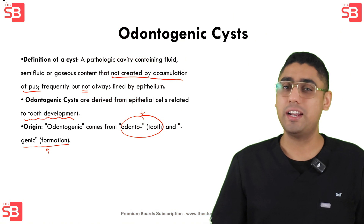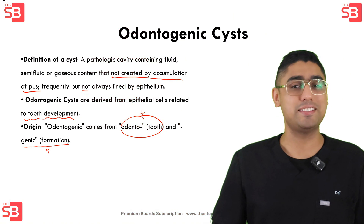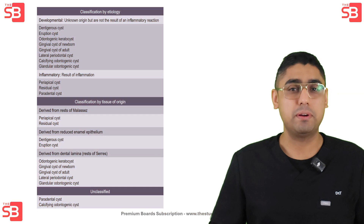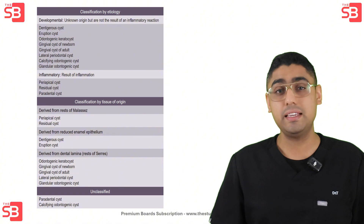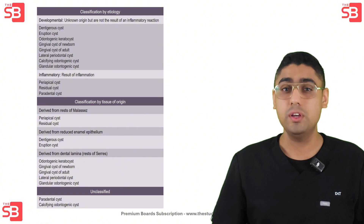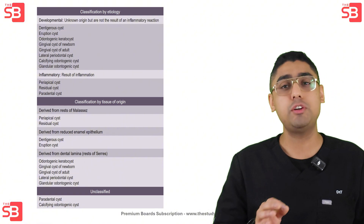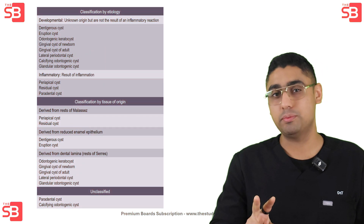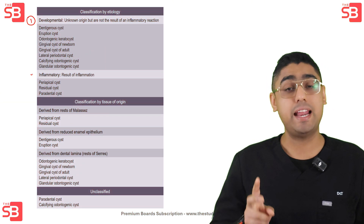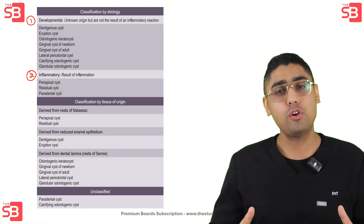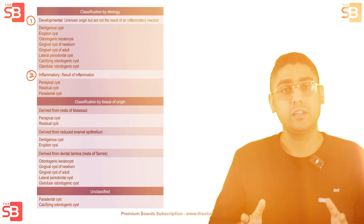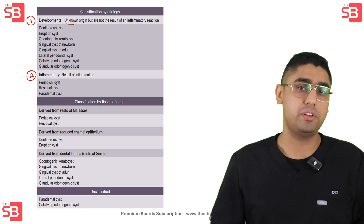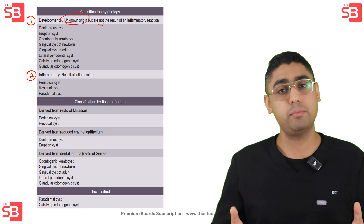Now let's take a look at how odontogenic cysts are classified. These cysts can be categorized in various ways, but the method we will discuss is the most common and straightforward one. We can break them into two main groups: developmental cysts and inflammatory cysts. Developmental cysts have an unknown origin and importantly they do not result from inflammation.